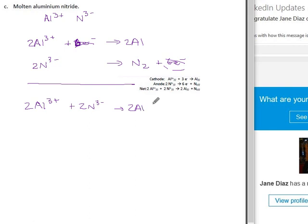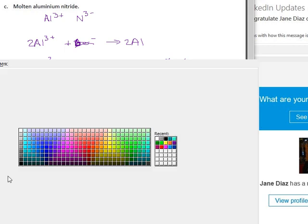Which happens at the cathode and which one at the anode?